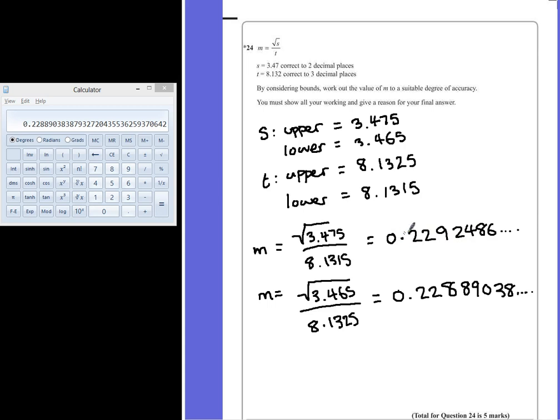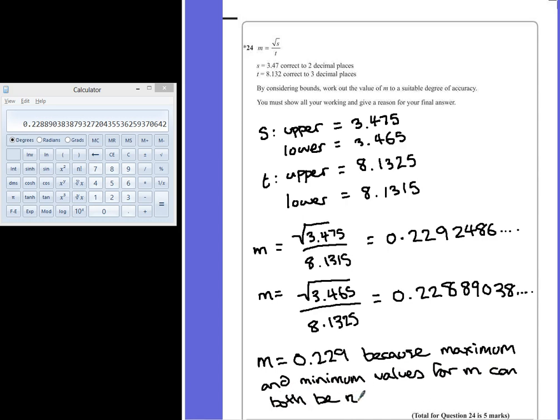After that, the first number would be 0.2292, the second one would be 0.2289, which are completely different. But both of these values can be rounded to three decimal places. So for a final answer, we're going to say M is equal to 0.229 because the maximum and minimum values for M can both be rounded to this.